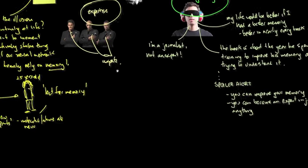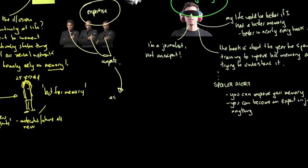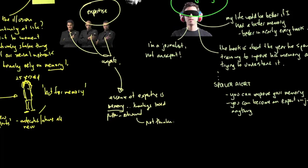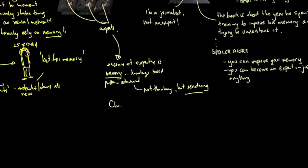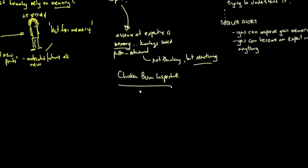Now onto expertise. Expertise, the author had a particular interest in. I think really because of the journey and the nature of his journey, he was trying to become an expert in memory techniques and in particular competing in the Memory World Championships. In essence, what he found was that expertise is really a lot about memory. It's pattern-based retrieval, and he found that experts did a lot of reacting, not thinking.